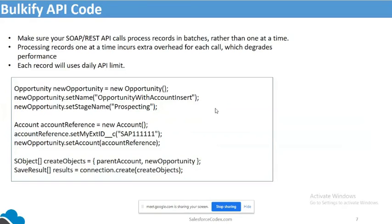The second thing is bulkifying API code. We all know that whatever code we are writing should be bulkified — and it's not only your core Apex code, your API should also be bulkified. APIs normally process only a single record, but you can create an API which processes multiple records as well — an API that can insert multiple records and return results for multiple records — supporting full batch or bulk processing.